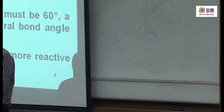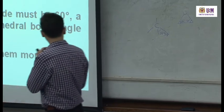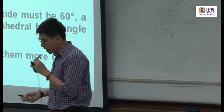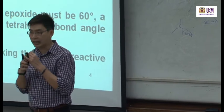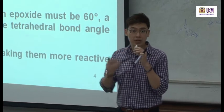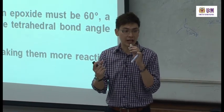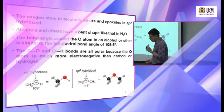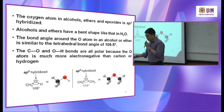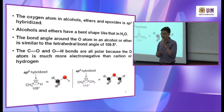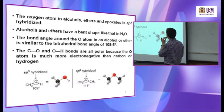Epoxides have angle strain because they are a three-membered ring. This makes them more reactive than other ethers — compared to other ethers, epoxides are more reactive because of the angle strain, making them unstable. The oxygen atoms in alcohol, ether, and epoxide are all sp3 hybridized.